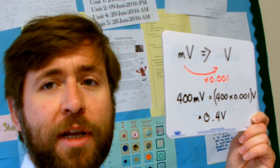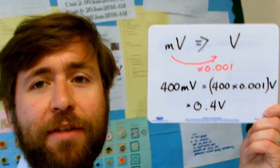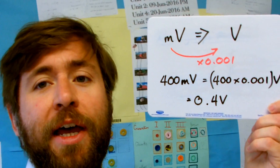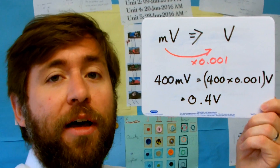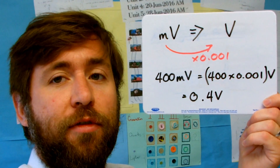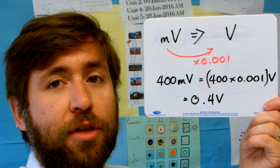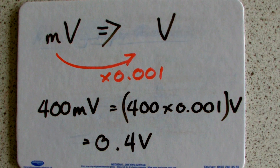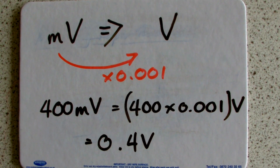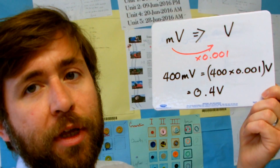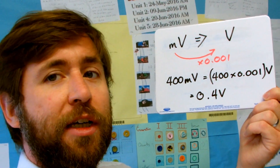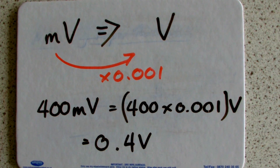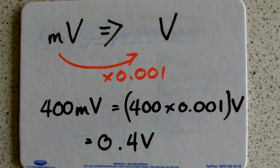There are other prefixes, obviously, that you need to be aware of. For example, milli. I've done this as millivolts, which is a common conversion. Milli means a thousandth — you can remember that a millimetre is a thousandth of a metre, that's something you're used to using. So millivolts would be times a thousandth, times 0.001 of a volt. So 400 millivolts, for example, is 400 times 0.001 volts, or 0.4 volts.